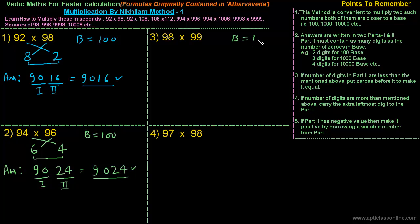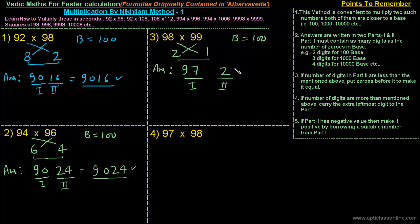Third example: 98×99. The base is 100. 98 is 2 less than 100, and 99 is 1 less than 100. The first part is 98−1 = 97, or equivalently 99−2 = 97. The second part is 2×1 = 2. But the second part contains only one digit, and it must contain two digits for base 100, so we put a zero before it, making it 02. The final answer is 9702.